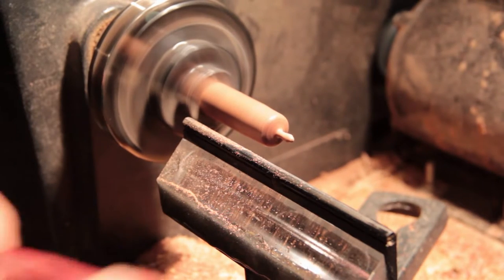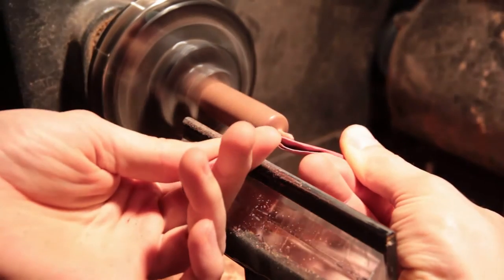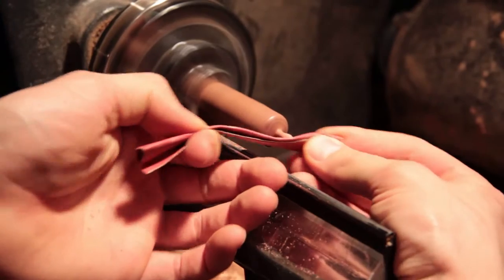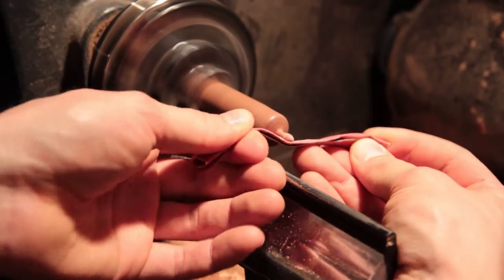So now I'm going to come in with some 400 grit sandpaper just to do some minor polishing on the handle and get the finish nice and smooth on it.